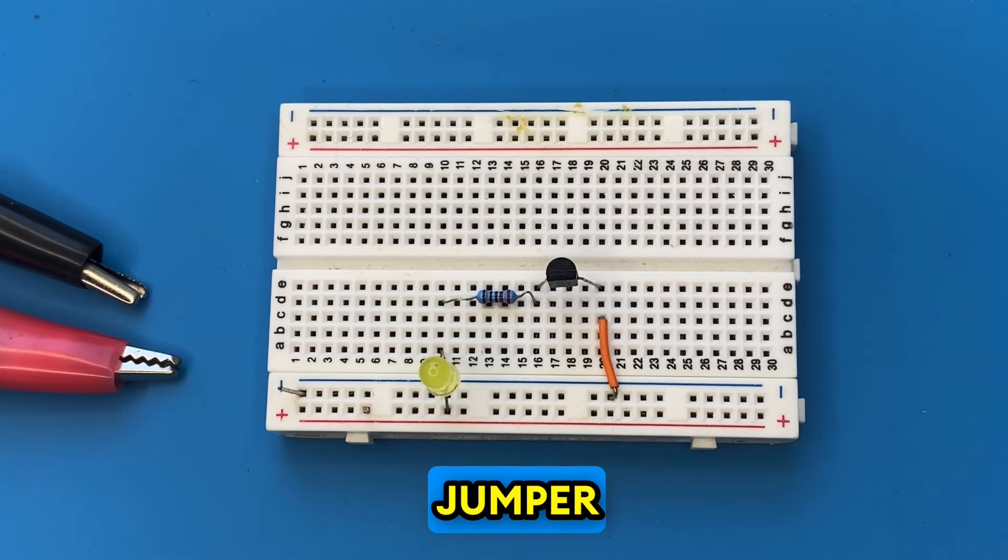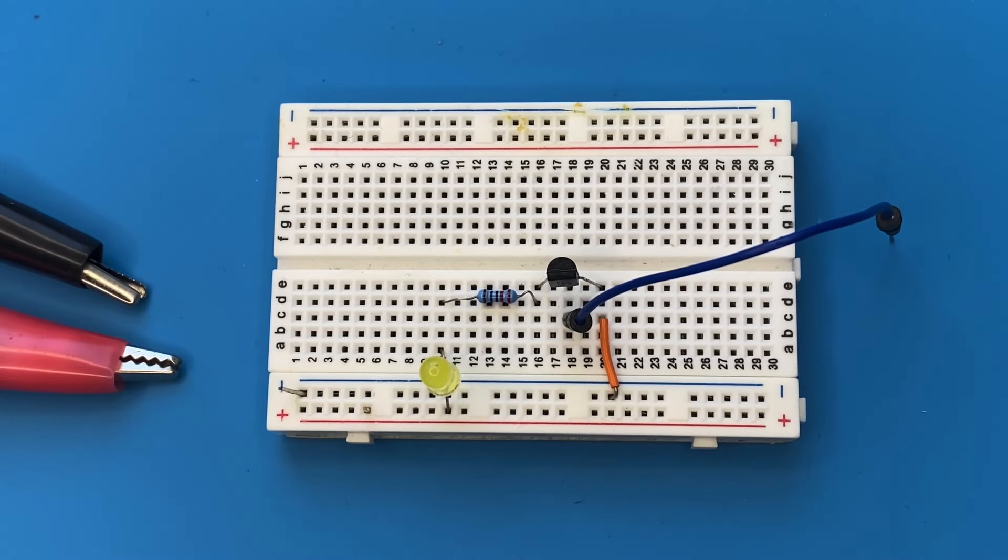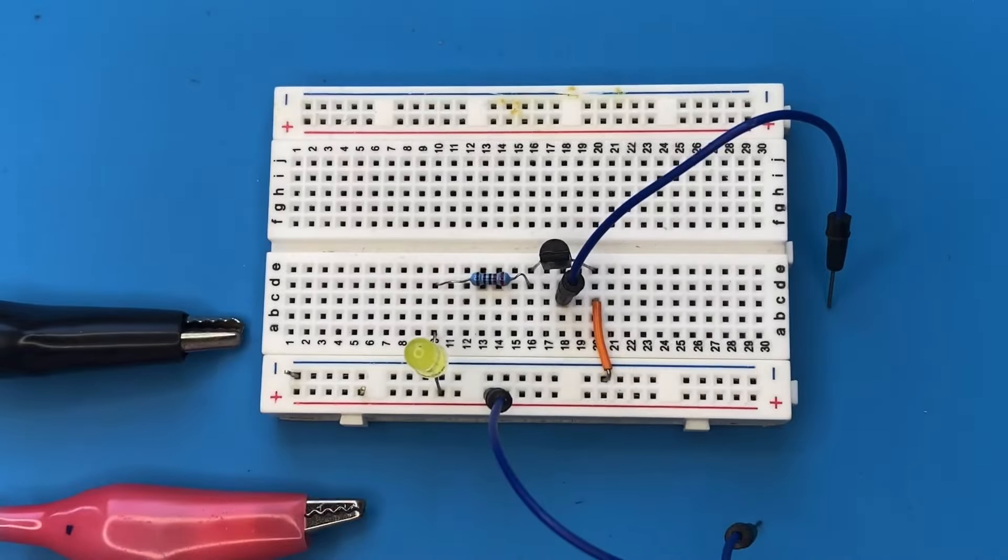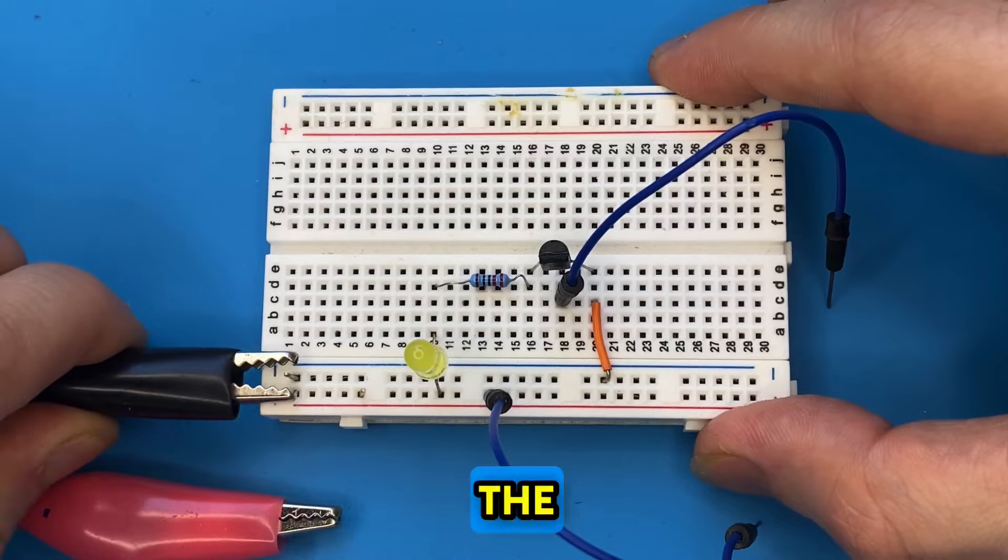Let's connect two jumper wires to the base of the transistor and to the positive rail of the breadboard. We are done with the setup of the project. Now let's connect the power supply to the breadboard.